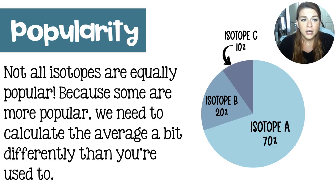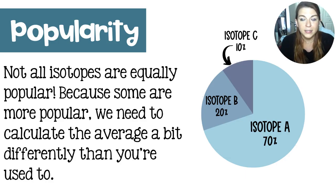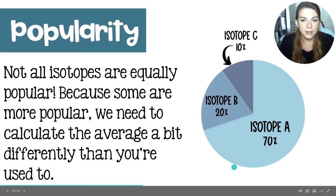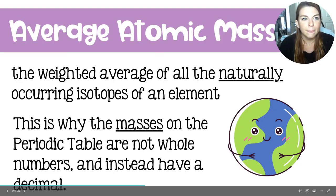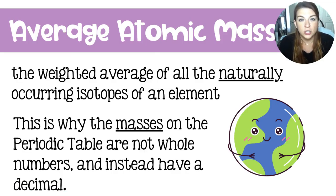Not all of our isotopes are equally popular. Sometimes you have one isotope that represents 99% of the population of all atoms of that element, and other times you'll have something like a 70-20-10 split. The average atomic mass, or the masses we find on the periodic table, are the weighted averages of the naturally occurring isotopes of that particular element.